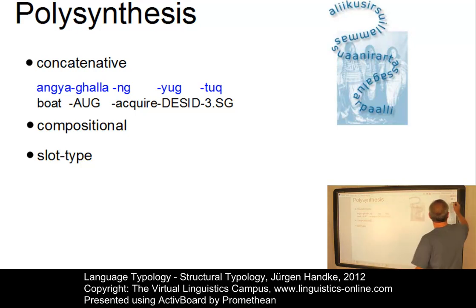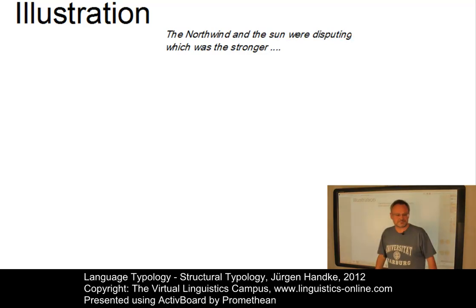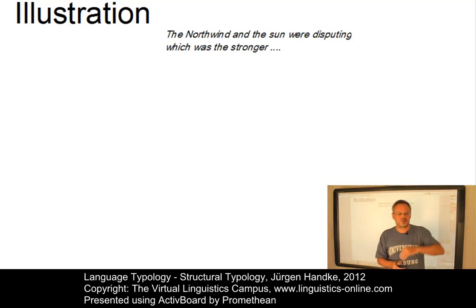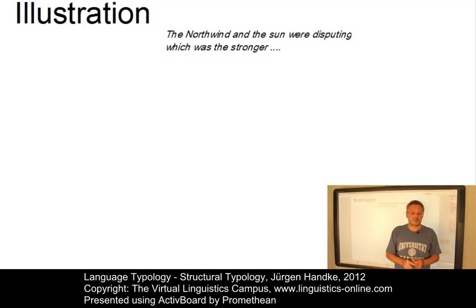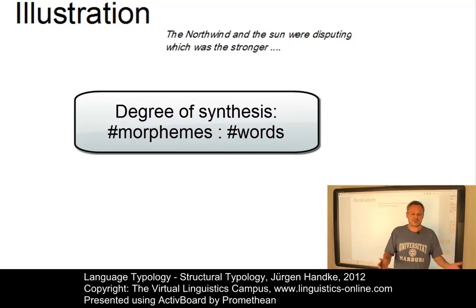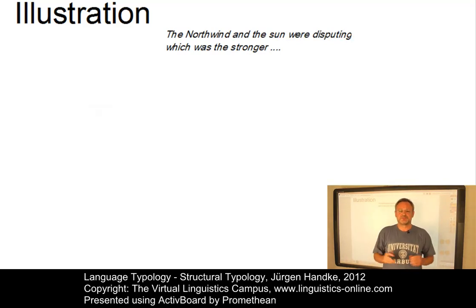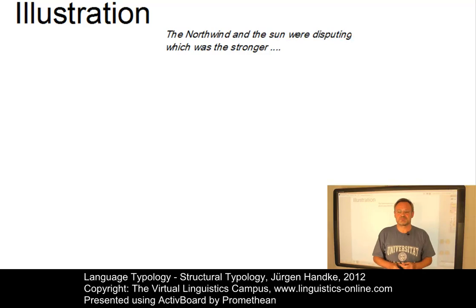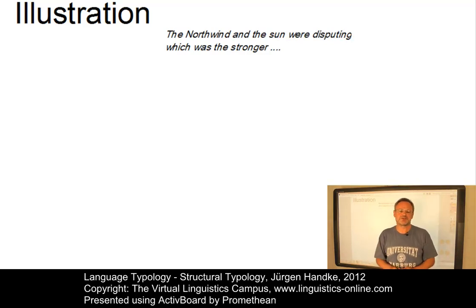Let's finally illustrate the degree of synthesis of a language. The distinction between analytic and synthetic is a continuum, and the position of a language on this continuum can be determined by calculating its degree of synthesis — that is, the number of morphemes per word in a random text sample. The random text sample available in the Language Index of the Virtual Linguistics Campus is the story 'The North Wind and the Sun.' Let's take the first sentence — the first clause — to illustrate the calculation.